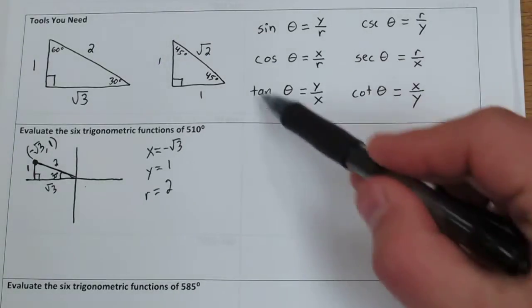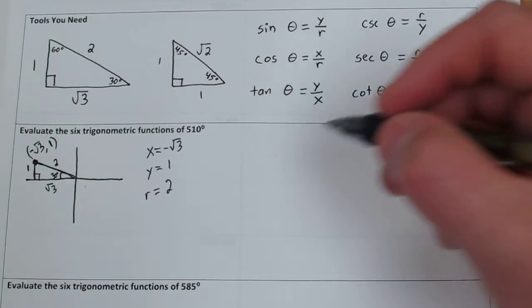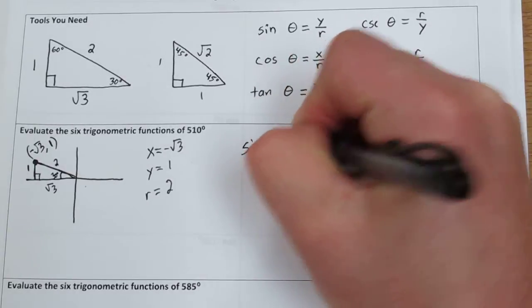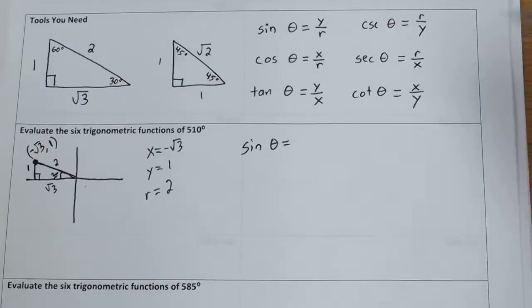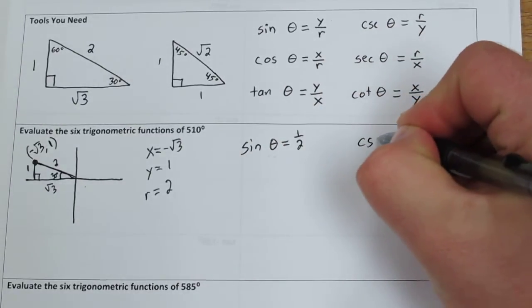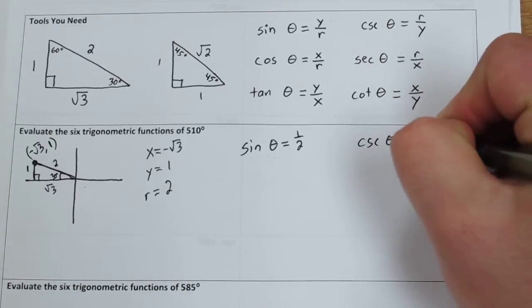Once you have x, y, and r, you can use these to figure out what everything is. For example, sine theta, since it's y over r, is going to be 1 over 2. That makes cosecant theta, the reciprocal, just 2.